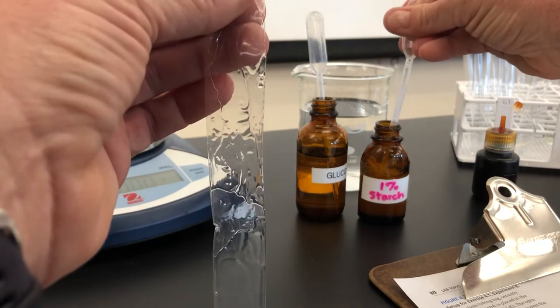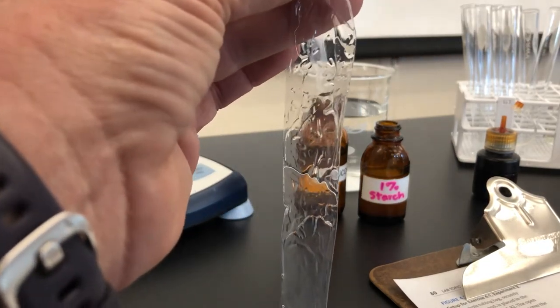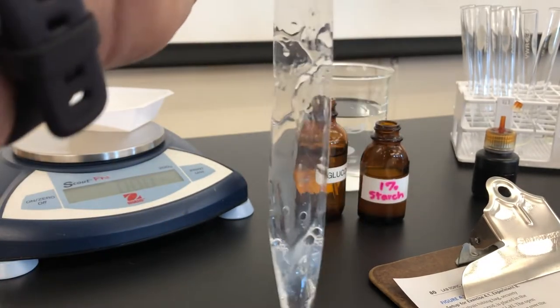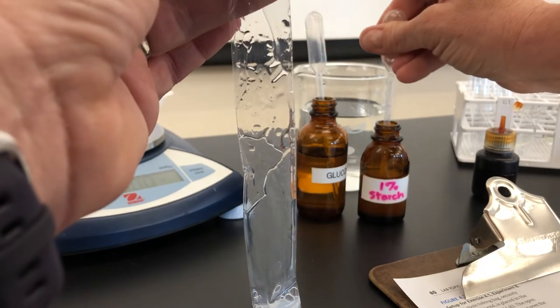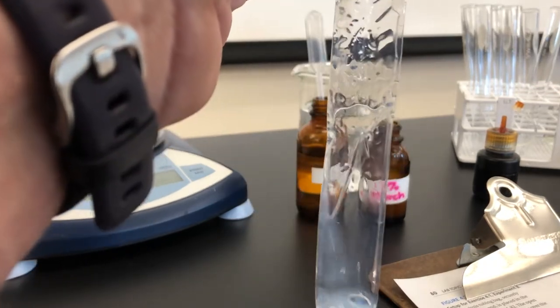Now for our starch. Note this starch is a little more cloudy where the glucose is very clear looking. If you recall these are both carbohydrates. One is a simple sugar and one is a complex sugar.